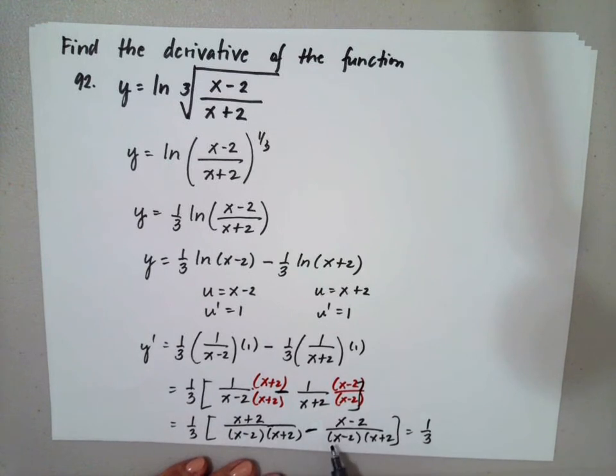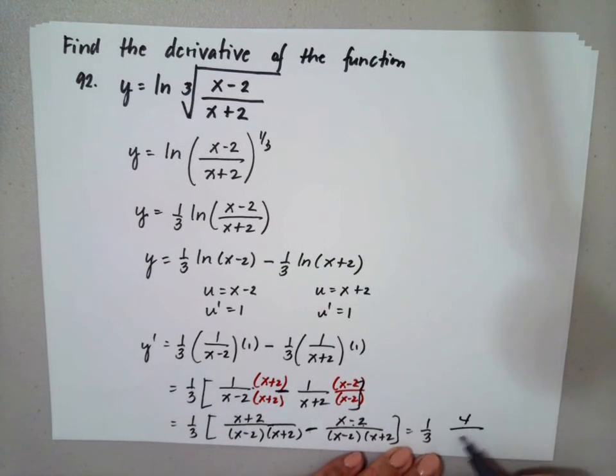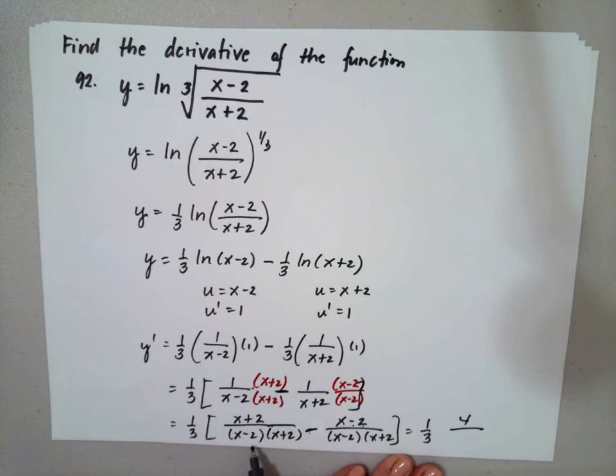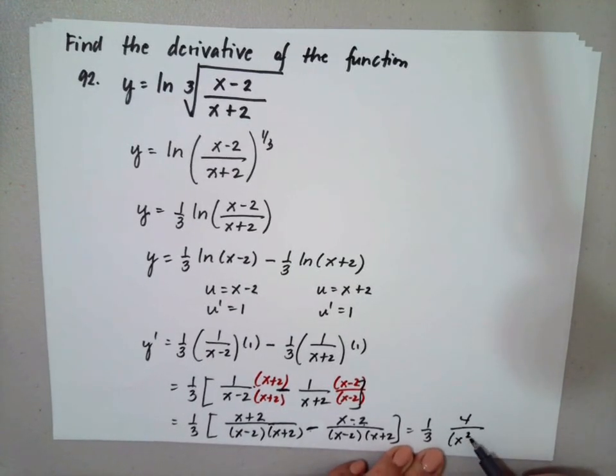x minus x will be 0. And negative multiplied by negative is positive. So this will turn to be 4 over, and x minus 2 multiplied by x plus 2 is equal to x squared minus 4.